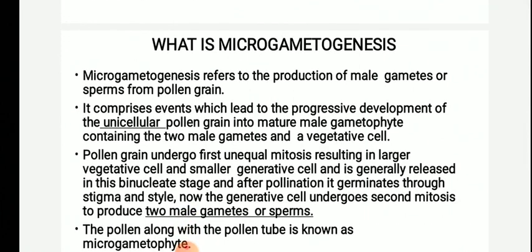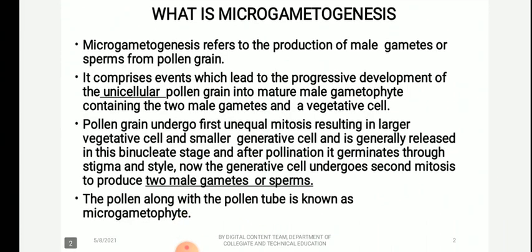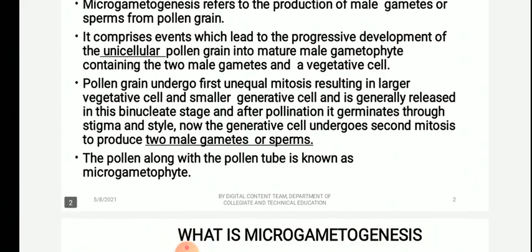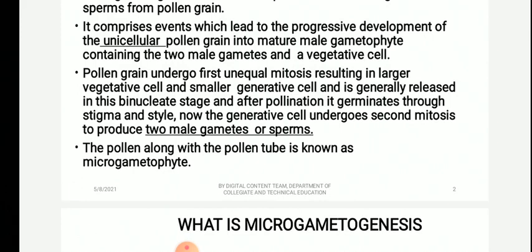Let us understand what microgametogenesis means. Micro means small, gameto means gametes, genesis means the production of gametes. Therefore, microgametogenesis is the formation of micro or small gametes in the angiosperms. Microgametogenesis refers to the production of male gametes or sperms from the pollen grain, leading to the progressive development of the unicellular pollen grain into a mature male gametophyte containing two male gametes and a vegetative cell.